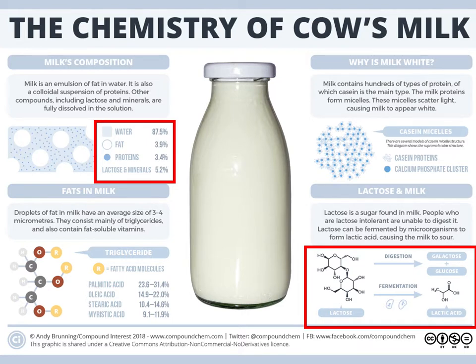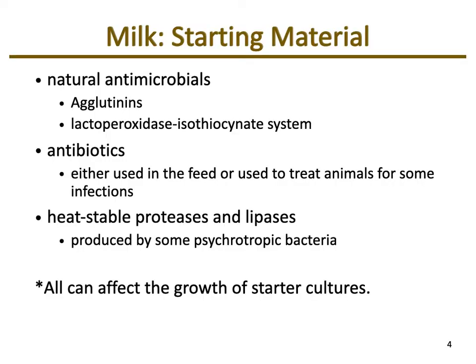The major proteins in milk fall into two categories: casein and whey. If you look at different products that contain milk, you might see whey or casein listed. Casein is the major protein found in milk and cheeses. There are also other materials in milk, including natural antimicrobials — some produced by the microbes present in the milk and some produced by the mammal itself, such as immunoglobulins and the lactoperoxidase system, which help prevent microbial growth.